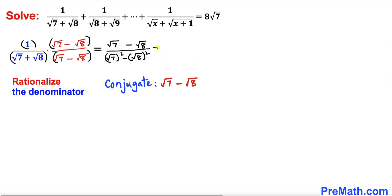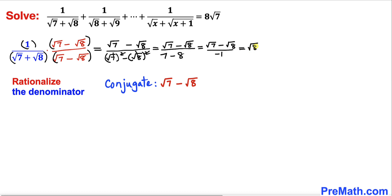Simplifying further, that gives us square root of 7 minus square root of 8 divided by negative 1. Multiplying by negative 1 on both sides, this can be written as square root of 8 minus square root of 7. So therefore we can write 1 divided by square root of 7 plus square root of 8 as square root of 8 minus square root of 7.